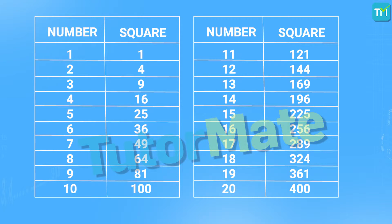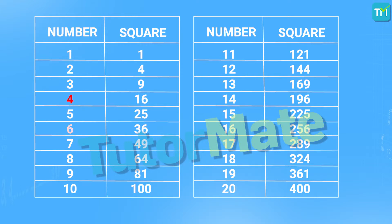Let's have a look at the squares of 3 and 7 — they are 9 and 49, while the squares of 13 and 17 are 169 and 289 respectively. So for the numbers whose last digits are 3 and 7, their squares will end with the digit 9. Similarly, the squares of 4, 6, 14 and 16 all end with the digit 6.